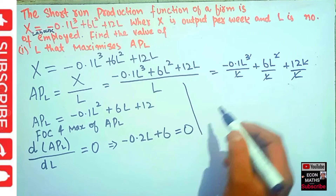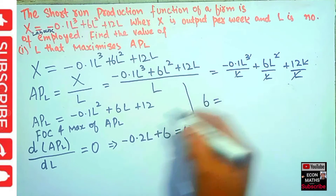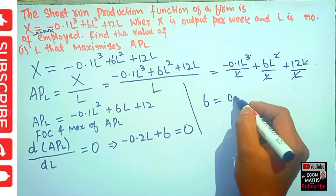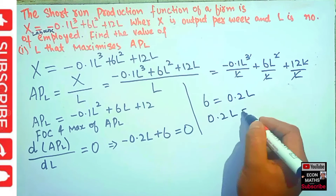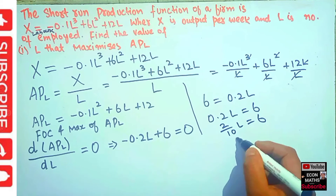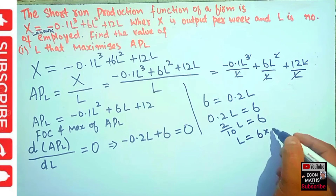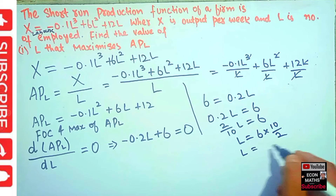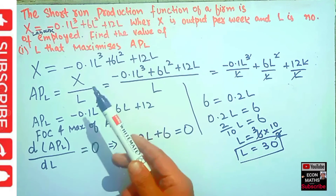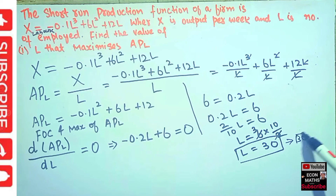Solving for L: transposing minus 0.2L to the right-hand side gives 6 equals 0.2L, or 0.2L equals 6. Writing 0.2 as 2 over 10: 2L over 10 equals 6, so L equals 6 times 10 over 2, which gives L equals 30. Therefore, the number of labors that maximizes the average product of labor is equal to 30.